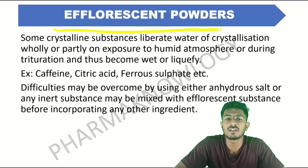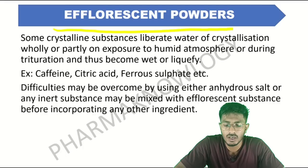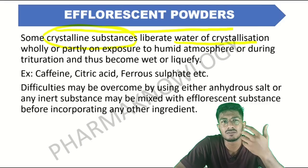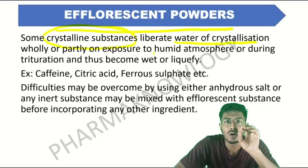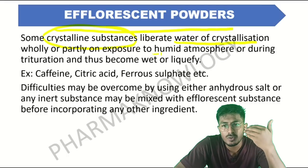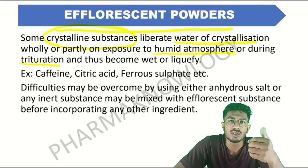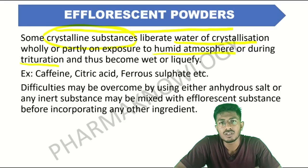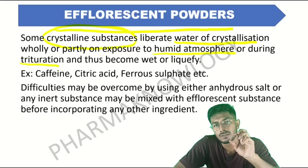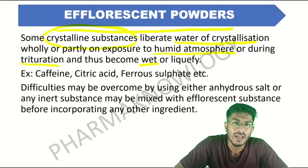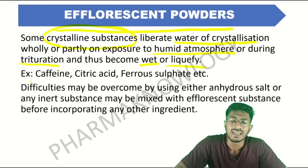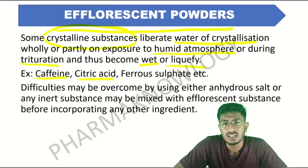The next one is efflorescent powders. Efflorescent powders tend to become sticky or paste-like, or they even become wet or start melting. Such substances are known as efflorescent substances or efflorescent powders. For example, caffeine, citric acid, ferrous sulfate, etc.